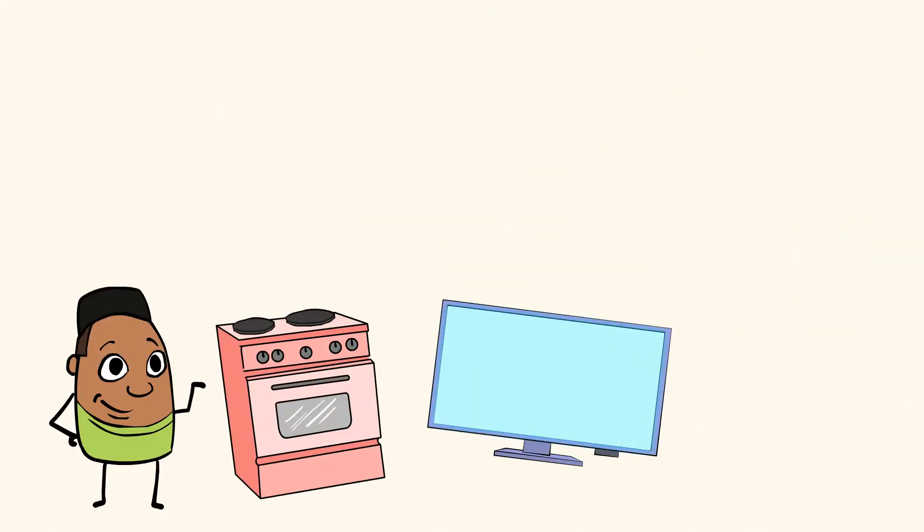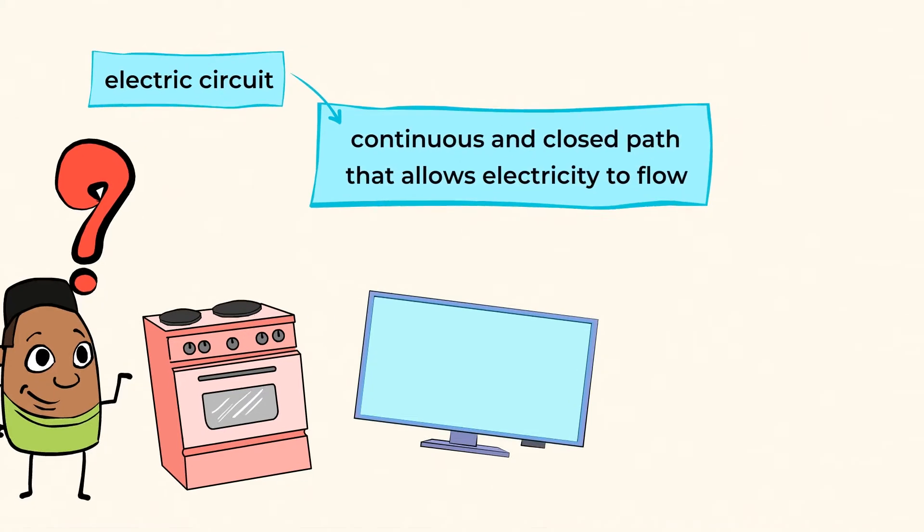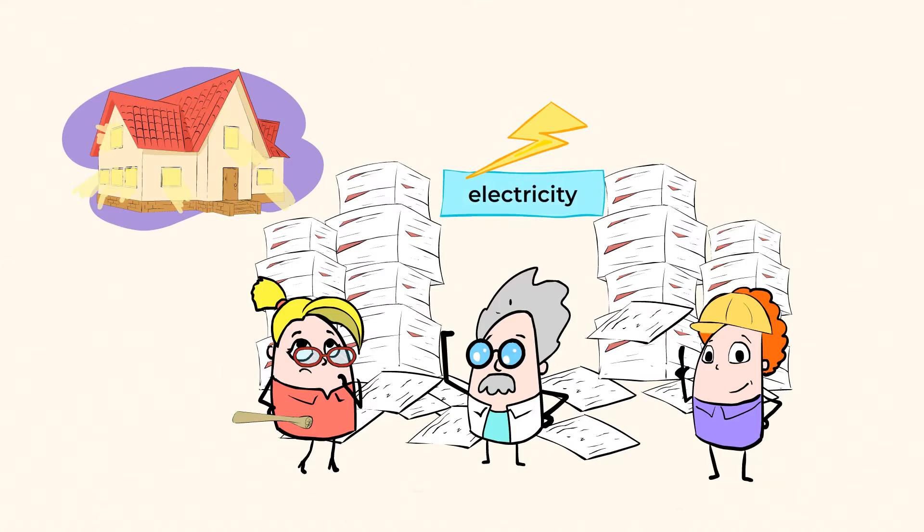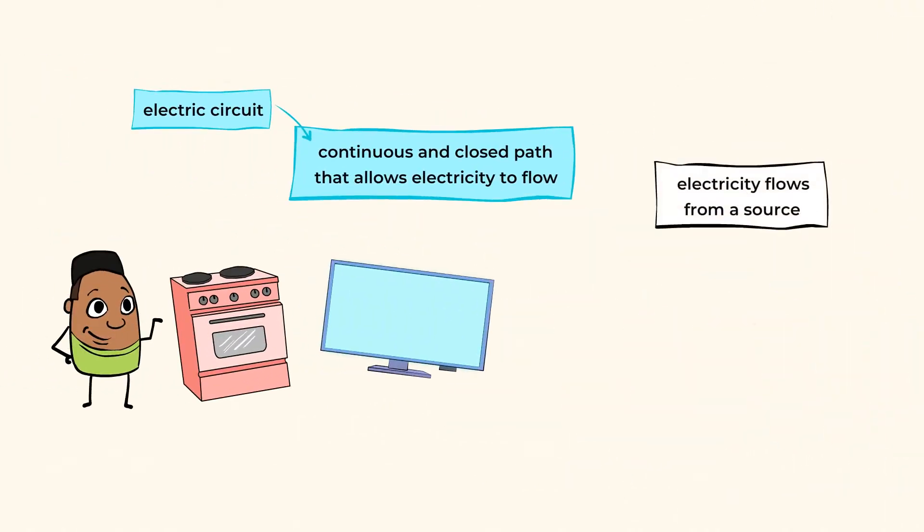All devices that use electricity depend on the flow of energy through an electric circuit. Now, here, you may ask, what is an electric circuit? Well, it's a continuous, enclosed path that allows electricity to flow. Engineers have figured out how to make electricity do things like light our homes when it's dark outside, or power the ovens in which we cook our food. To do this, electricity needs to be able to flow from a source, like a battery, to something like a light bulb.